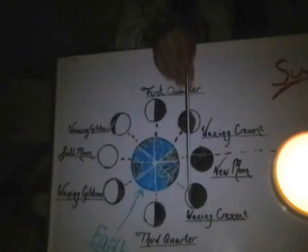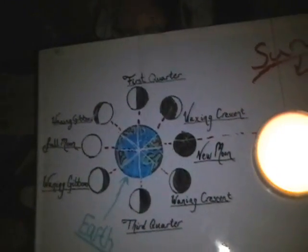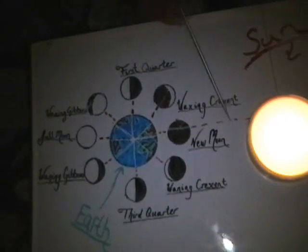This is a waning crescent. This occurs when the sun, the earth, and the moon create an acute angle.